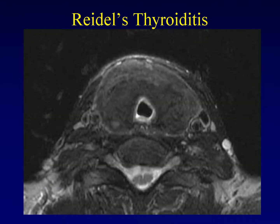Rydell's thyroiditis is a form of IgG4 disease with a characteristic appearance on T2-weighted MRI. The fibrous deposition characteristic of this disease is dark on T2. So an expanded gland that is dark on T2 is characteristic of Rydell's thyroiditis.